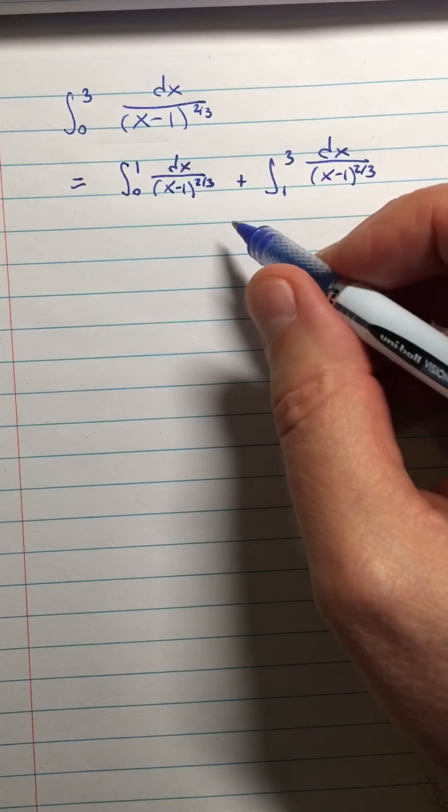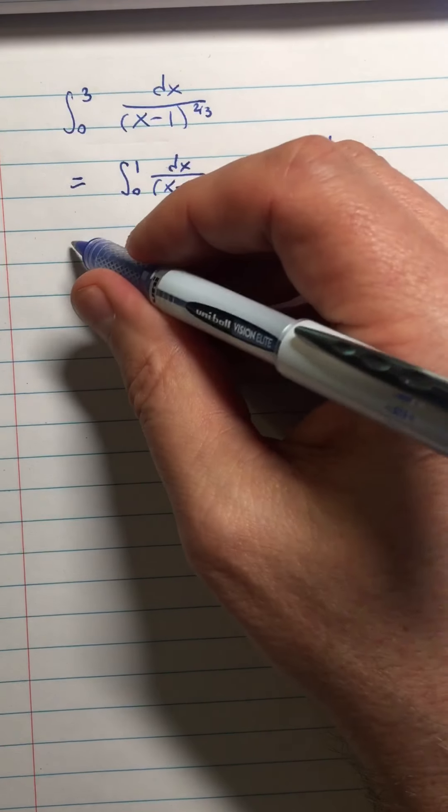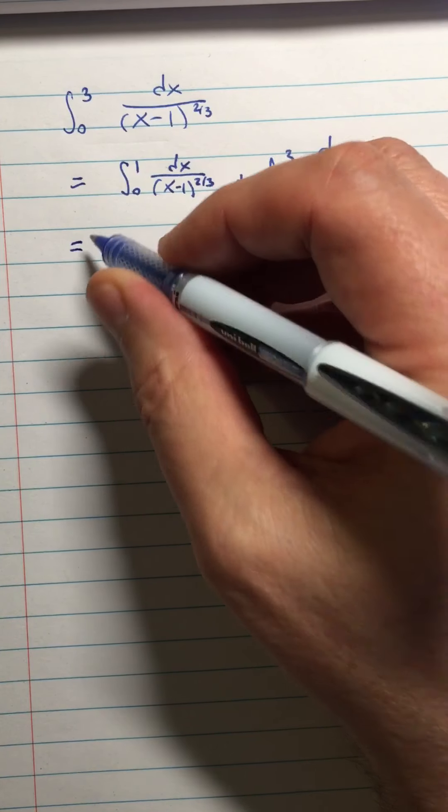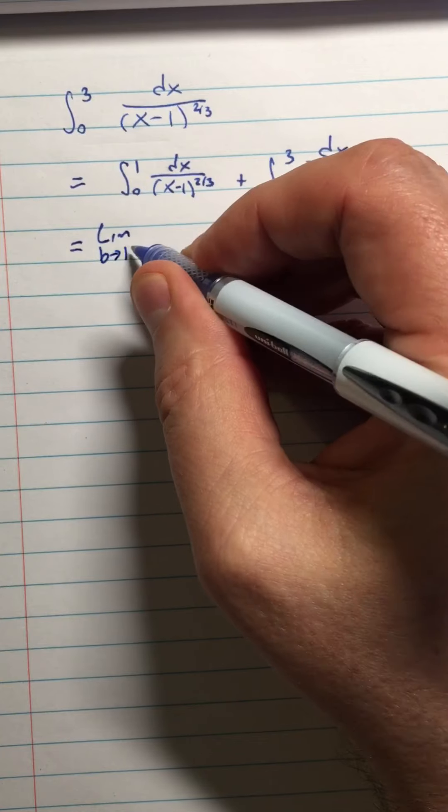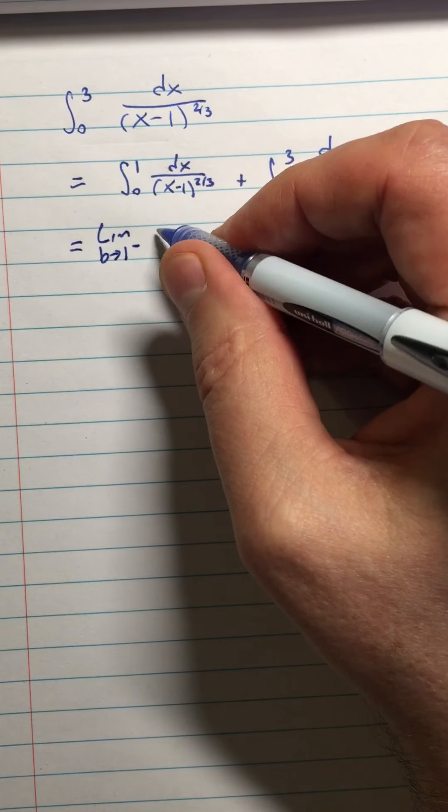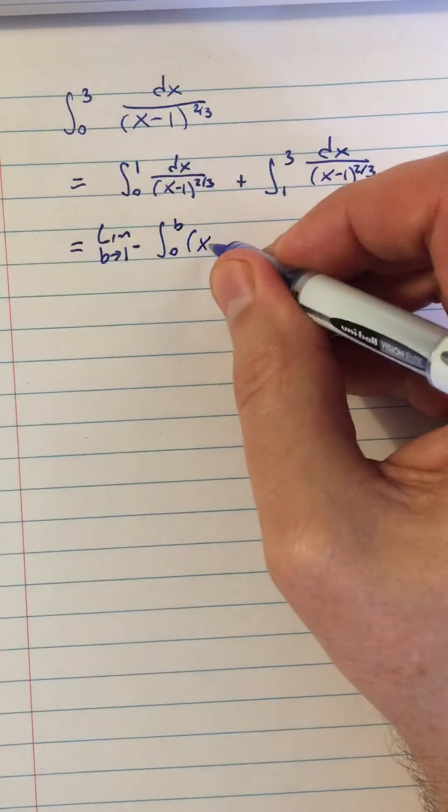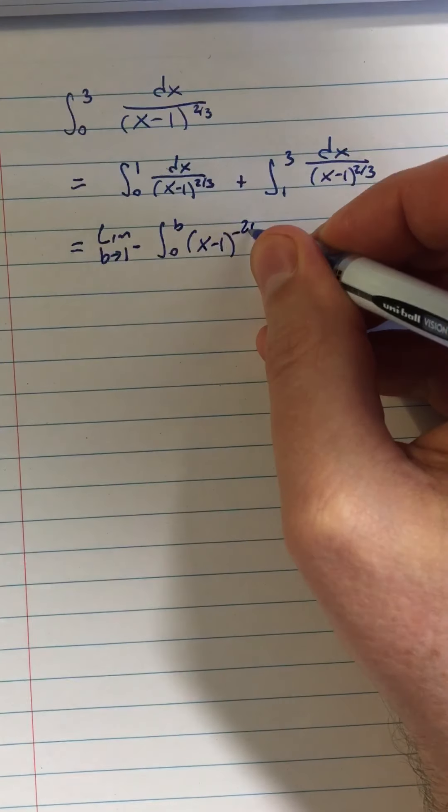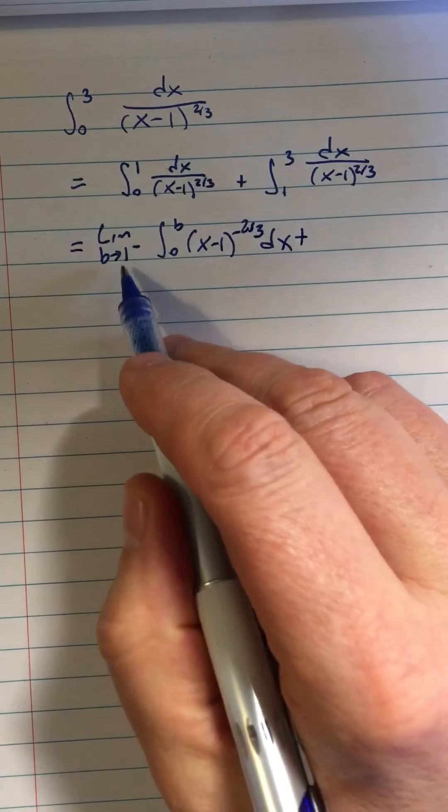All right, so now each of these we're going to split down as a limit. So the first one is going to be the limit as b approaches 1 from the left of the integral from 0 to b, and let's write this as (x-1)^(-2/3) dx, plus...